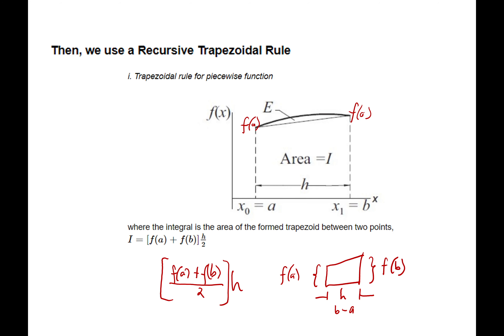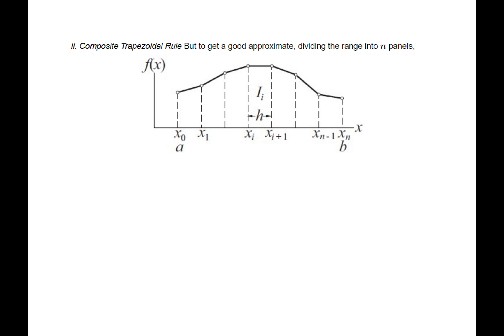This is for one area only. To get a better approximation, we divide the curve into many divisions — composite areas. We divide the integration range into many panels. You can see that each panel is approximated as a straight line forming a trapezoid. This is the composite trapezoidal rule: compute each individual trapezoid area using the same formula, then add all individual areas to get the total.